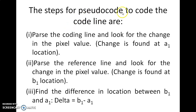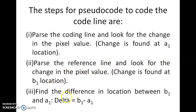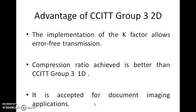The pseudo code to encode the coding line works as follows: parse the coding line and look for a change in the pixel value. The change is found at location A1. Then parse the reference line and look for the change in pixel — the change is found at location B1. Find the difference: delta equals B1 minus A1, where A1 is in the coding line and B1 is in the reference line.